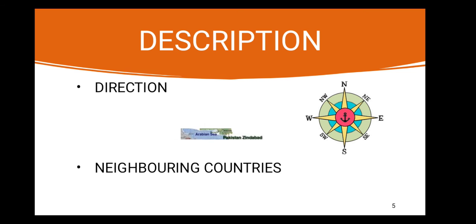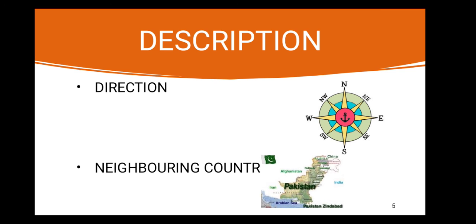The next chapter is neighboring countries. What are the neighboring countries of Pakistan? And how many are there? We have around four to five neighboring countries: China, Afghanistan, India, and Iran.